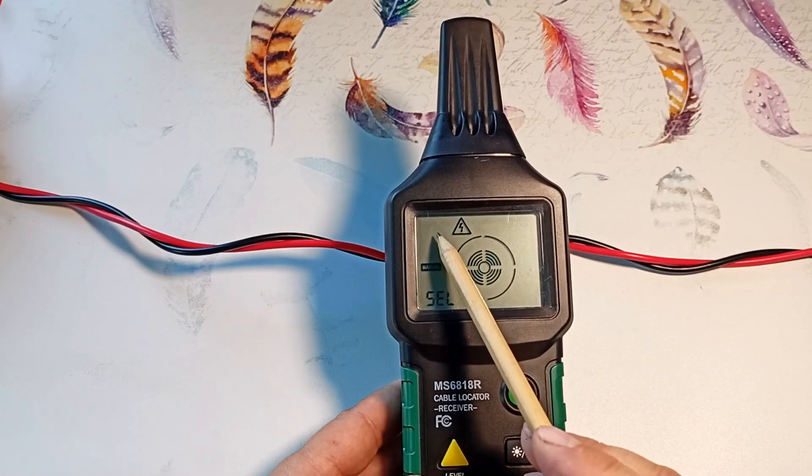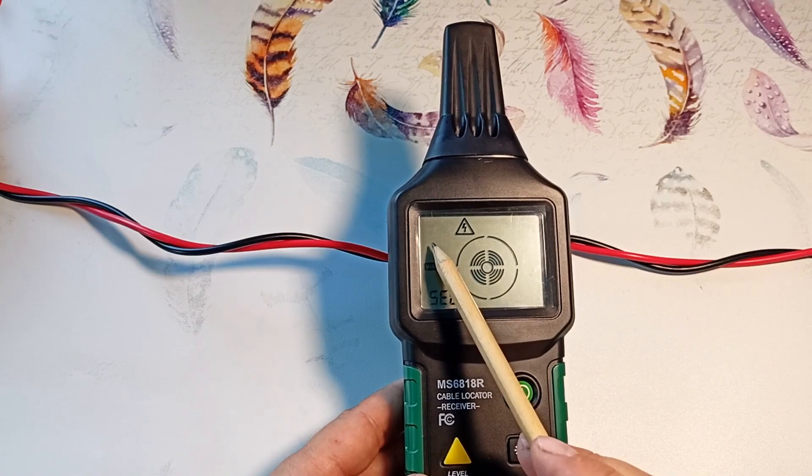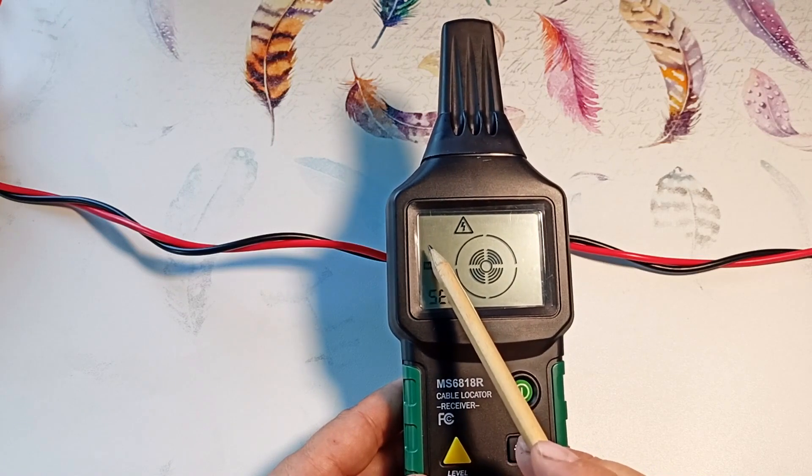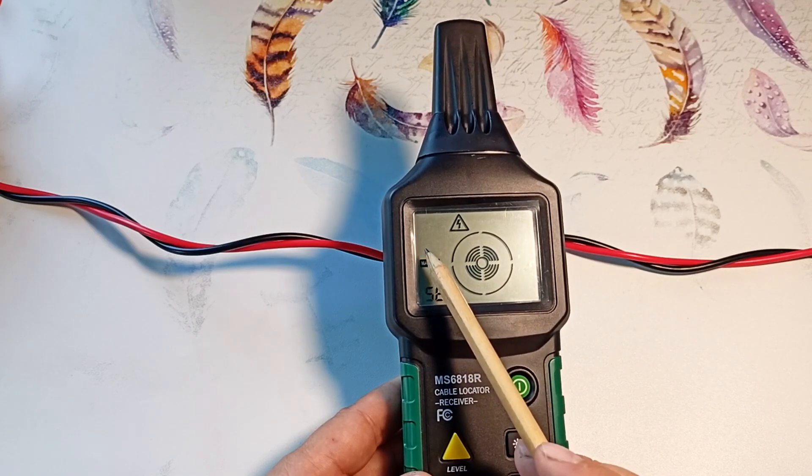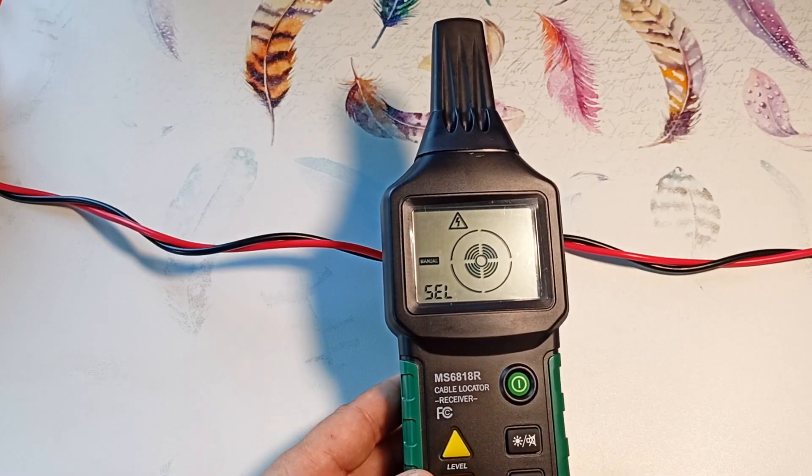If the batteries are low, it will be displayed in this place. Moreover, the receiver can show both the discharge of its own batteries and the discharge of the generator batteries. They should be changed.